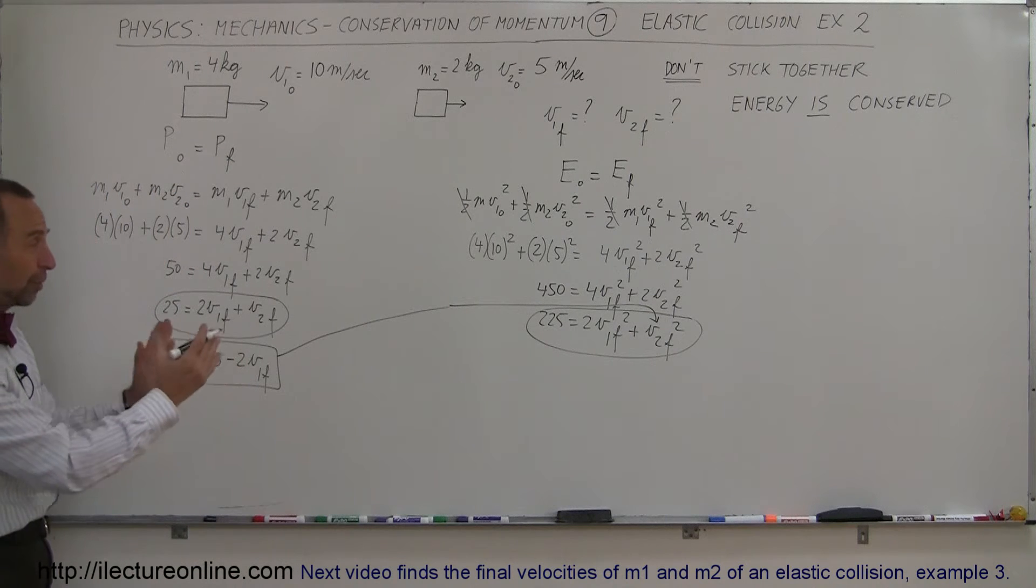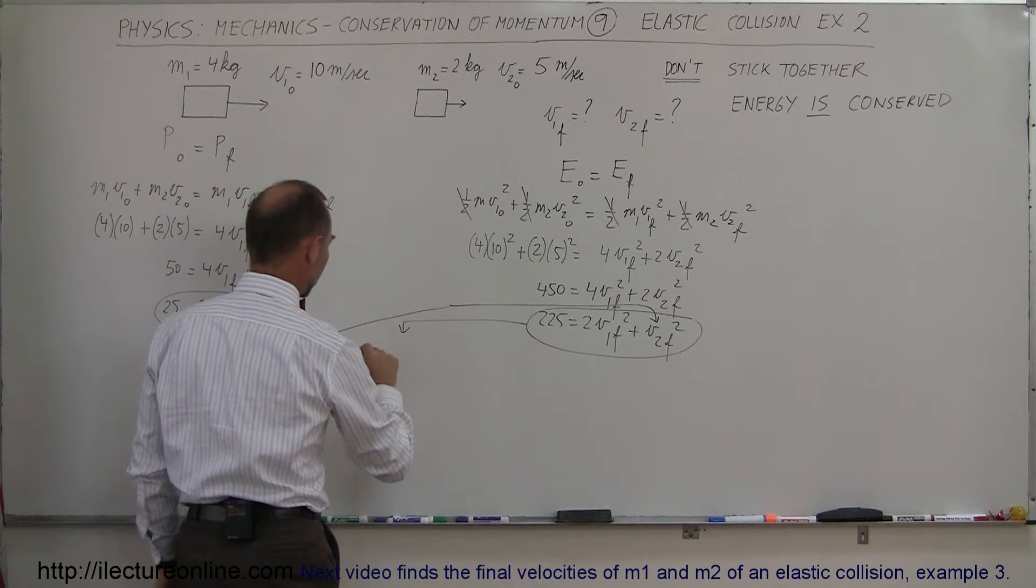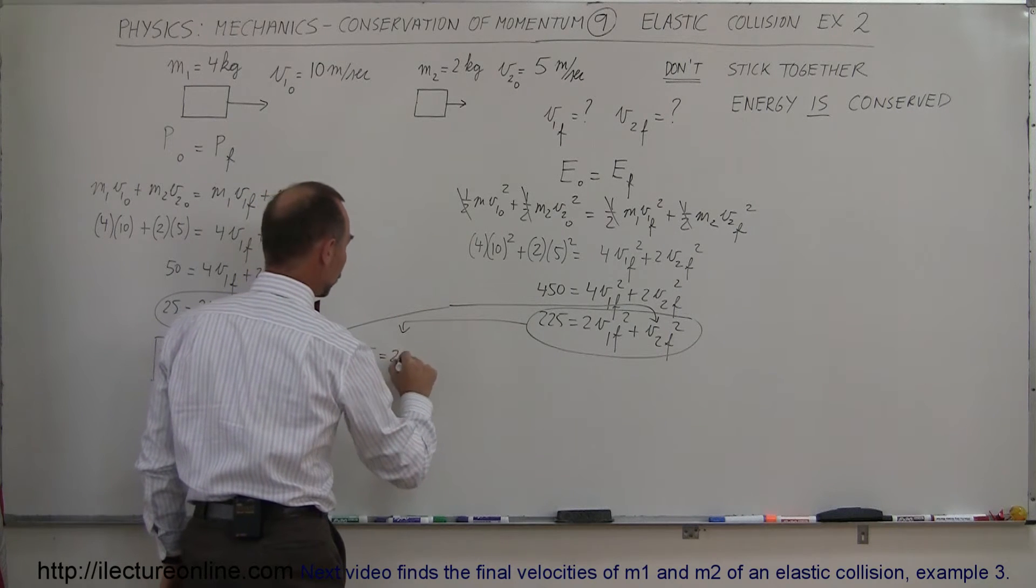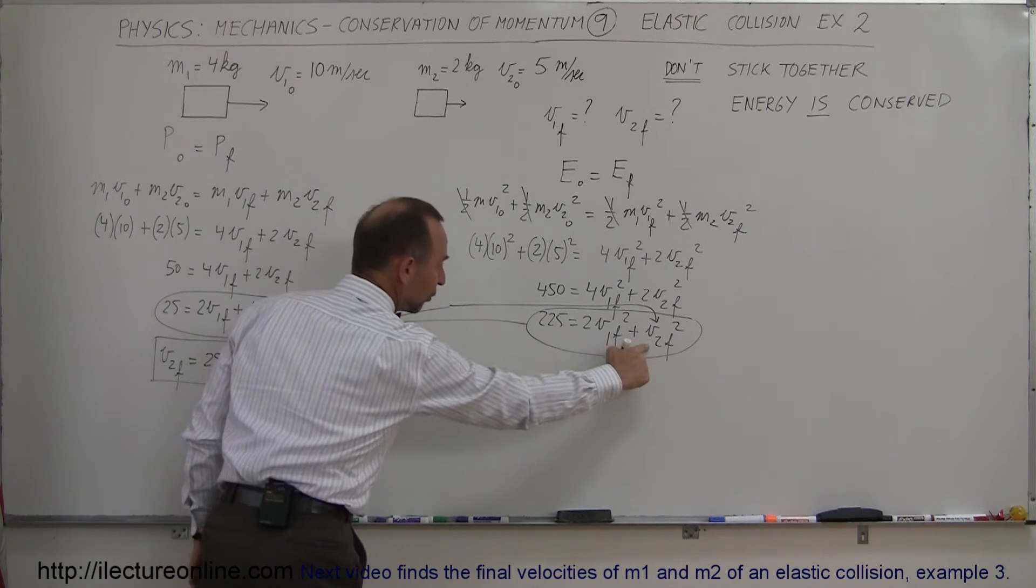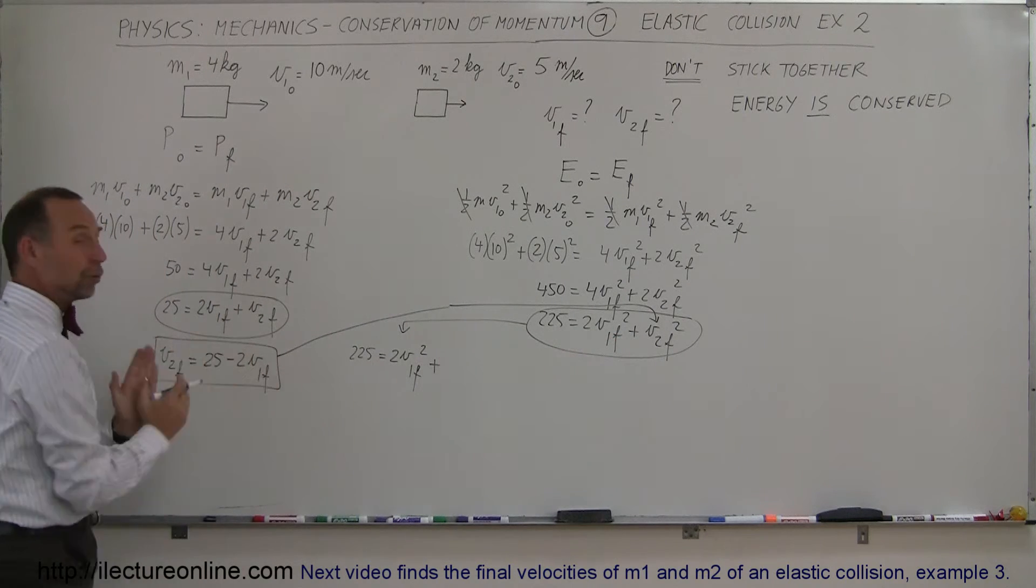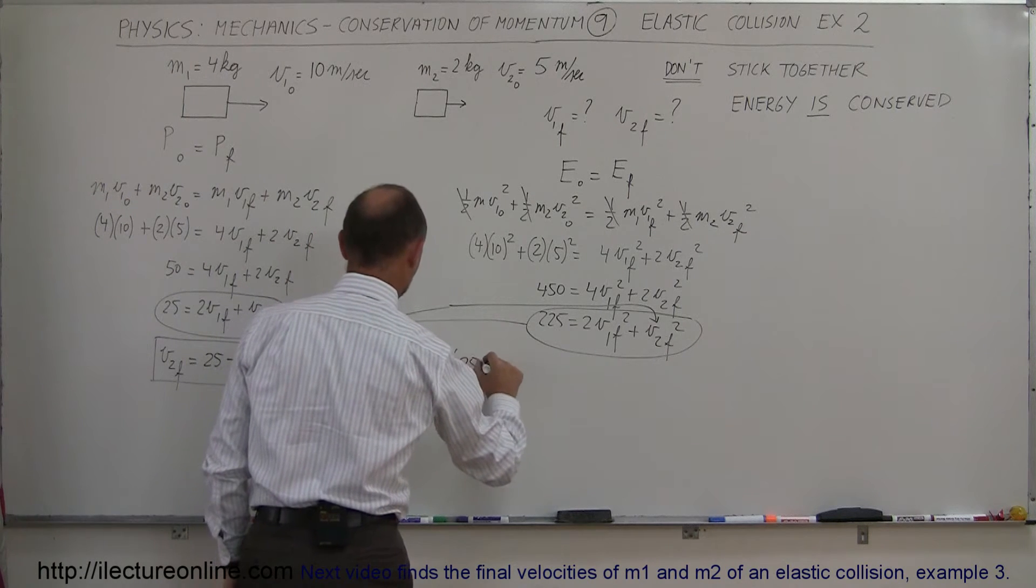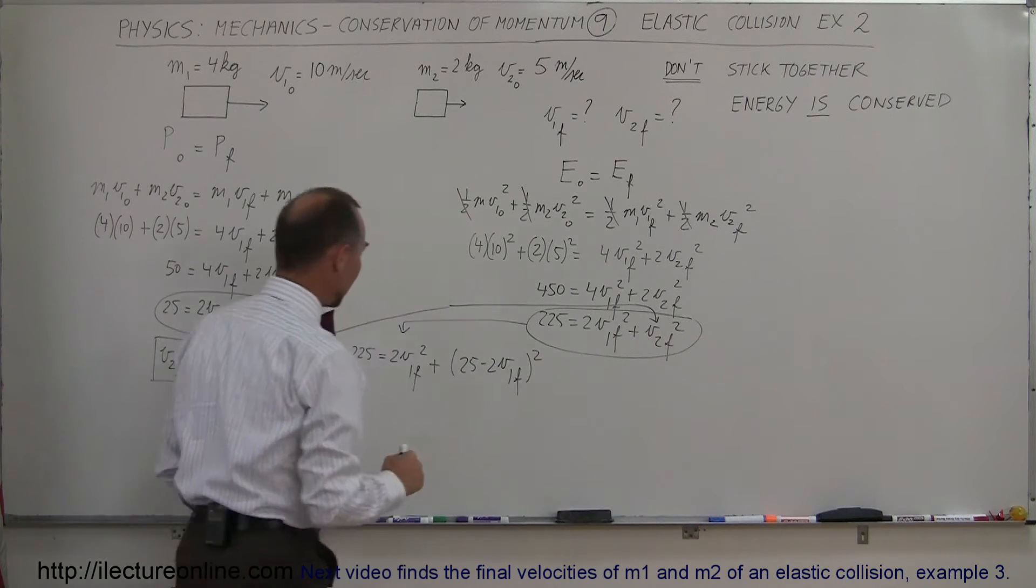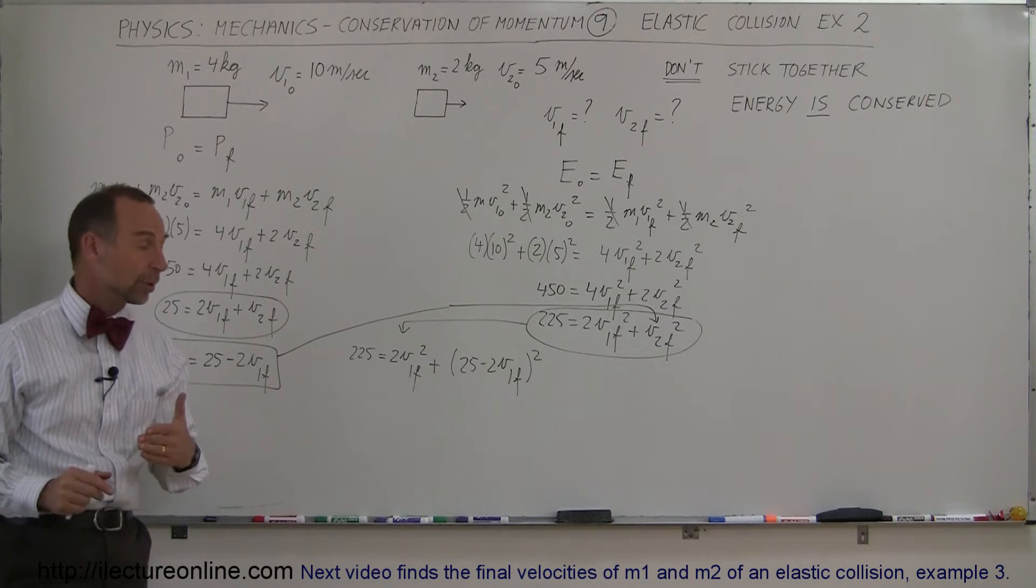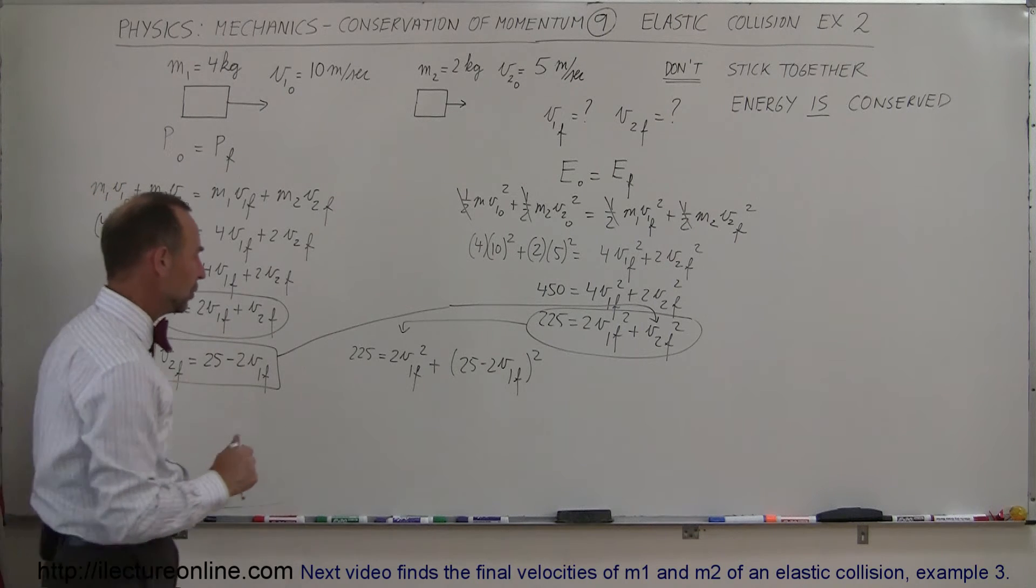Now I'm going to move it over to the left a little bit, so I have a little bit more room. So continuing over here, we have 225 equals 2 V1 final squared plus, instead of V2 final, we're going to write what V2 final is equal to from our first equation. So that would be a plus 25 minus 2 V1 final quantity squared, because that's what we have right here. And now notice, now I have just an equation with only one unknown there, V1 final. Now I have to go through a little bit of algebra and the quadratic formula to solve for that.